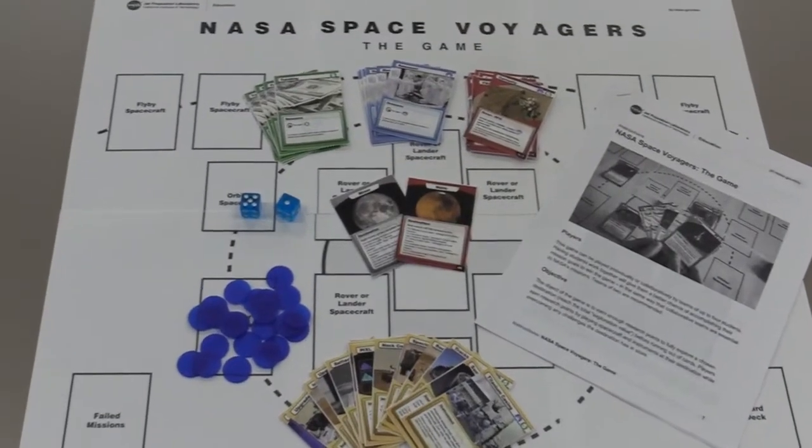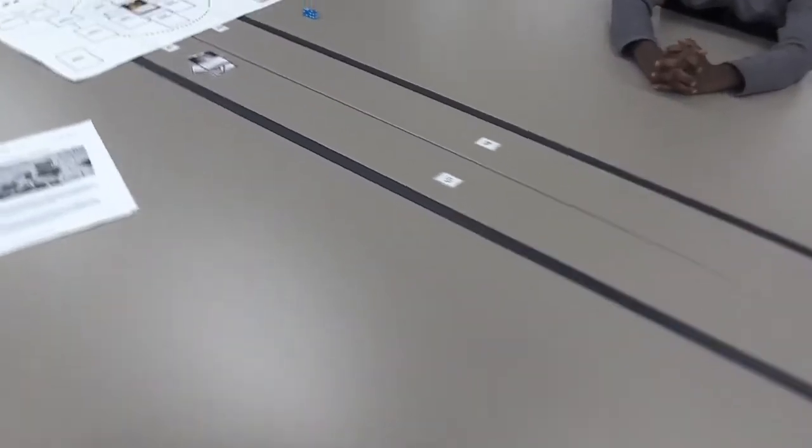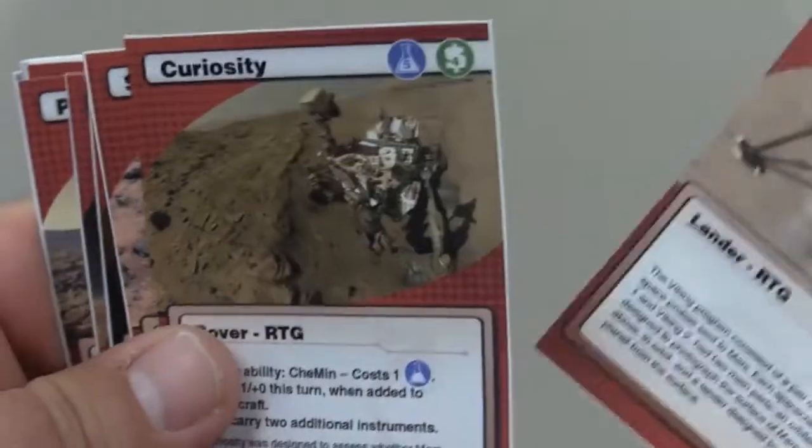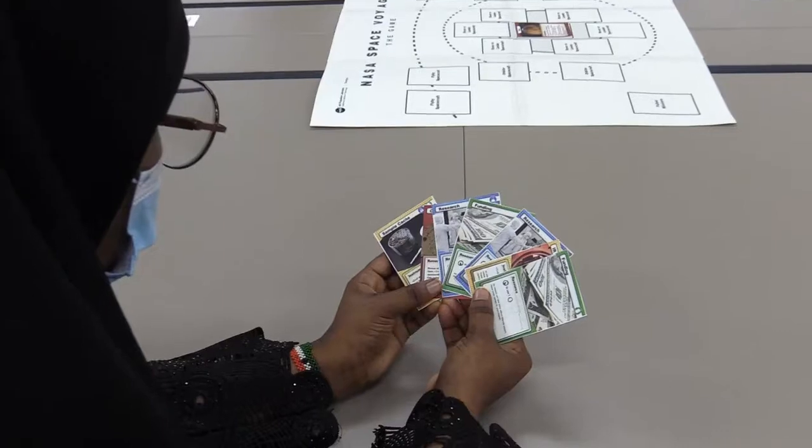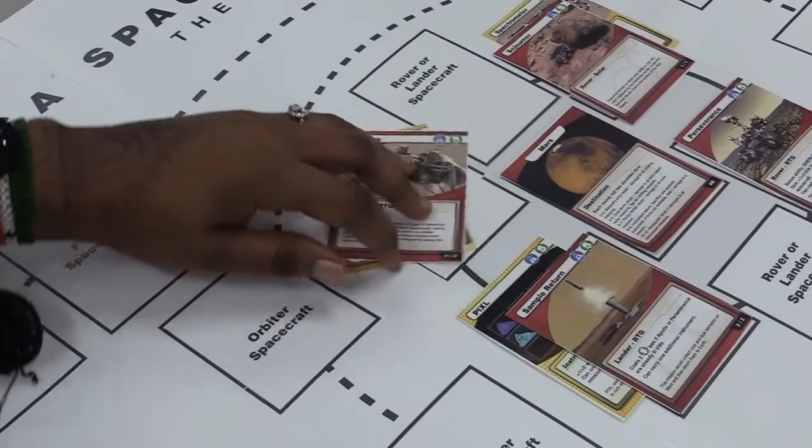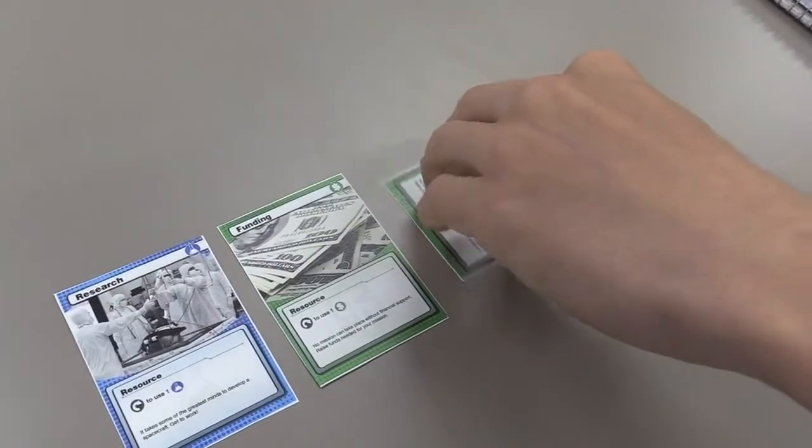In this strategy card game, students in grades 6 through 12 work individually or collaboratively to build a spacecraft capable of exploring our solar system. Students must use problem-solving skills as well as their knowledge of and research into STEM and space exploration concepts to win the game.